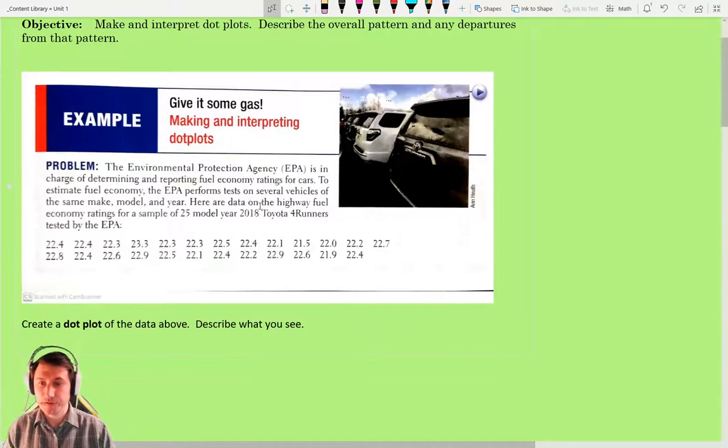So here's our first example. The Environmental Protection Agency, the EPA, is in charge of determining and reporting fuel economy rates for cars. To estimate fuel economy, the EPA performs tests on several vehicles of the same make, model, and year. Here are data on the highway fuel economy ratings for a sample of 25 model year 2018 Toyota 4Runners tested by the EPA. So here we have all the numbers.